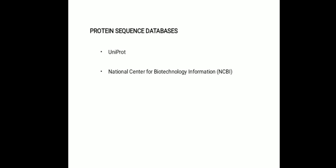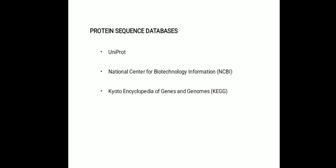The National Center for Biotechnology Information, or NCBI, also provides rich information and a number of useful tools for protein sequences. KEGG, the Kyoto Encyclopedia of Genes and Genomes, annotates some gene entries with information about metabolic and regulatory pathways.